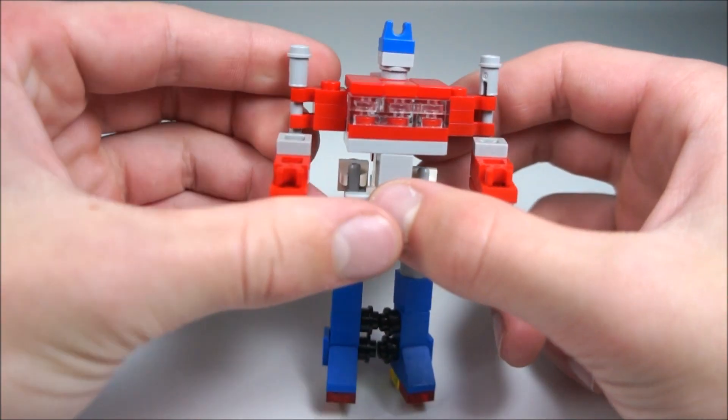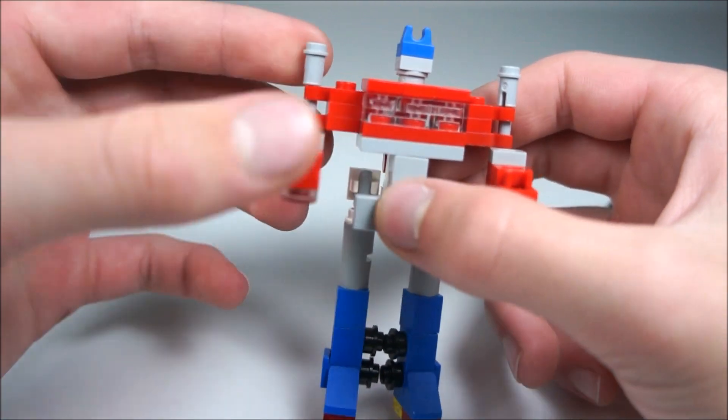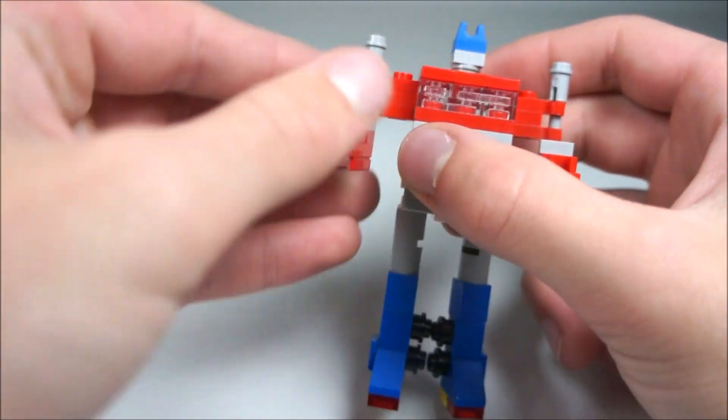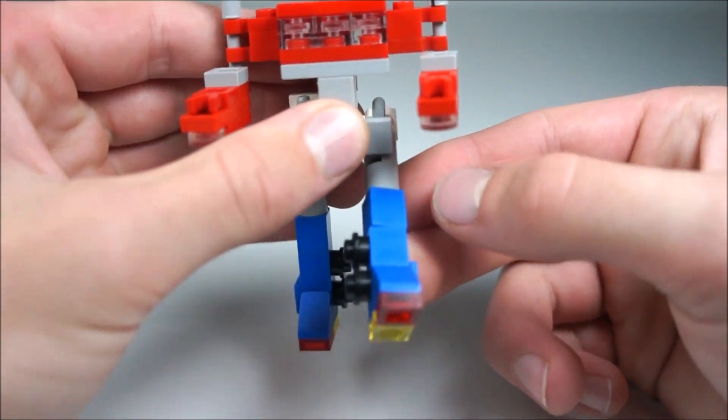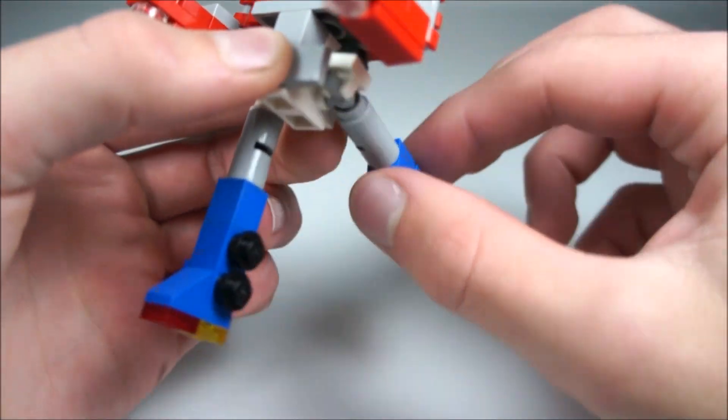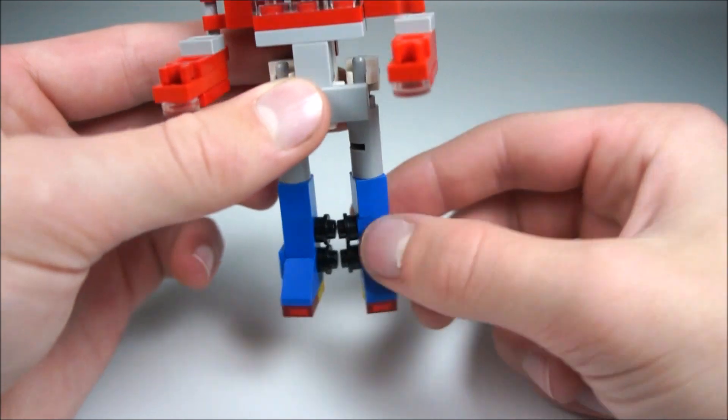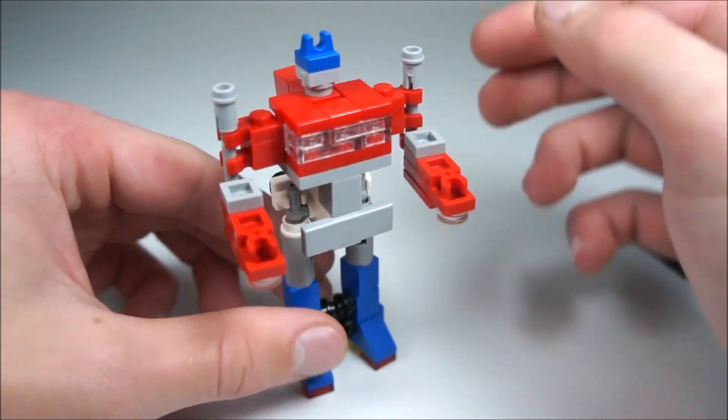For articulation, his arms of course move in and out. They turn here, and the elbow does bend a little. His leg moves forward that far, backward as far as you want. Twists, and there's no knee, but I don't care. I use him as a statue.